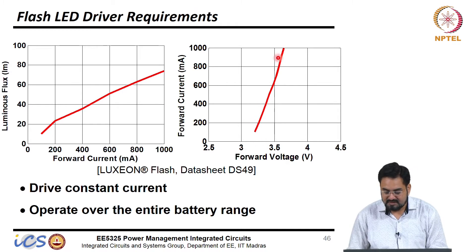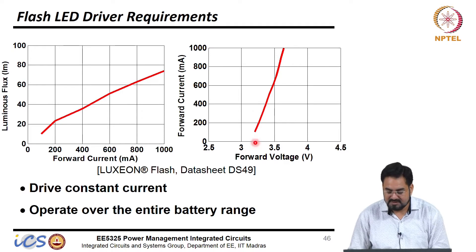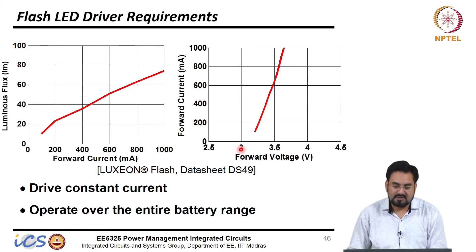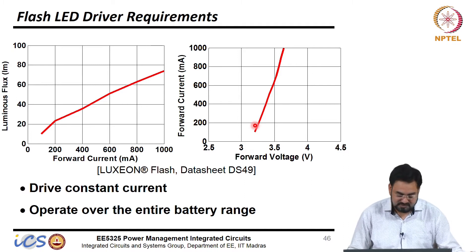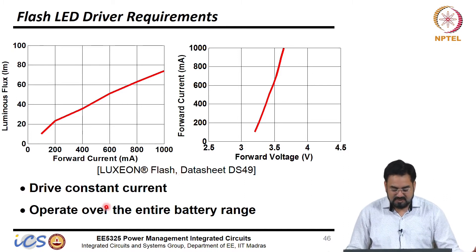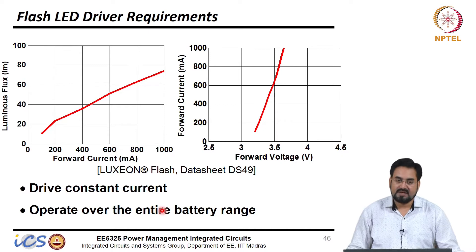We know there is an exponential relationship with the forward voltage. At 1 amp, the forward voltage required will be more than 3.5 volts, and it could be slightly higher than 3 volts when we are below 200 milliamp or so. It drives a constant current and operates over the entire battery range.